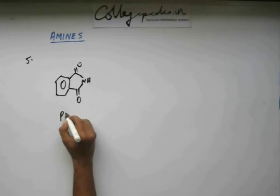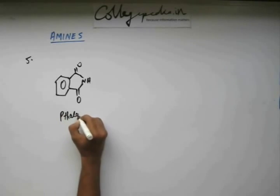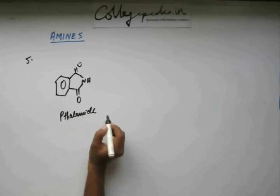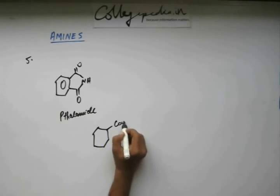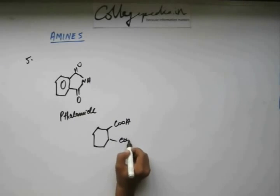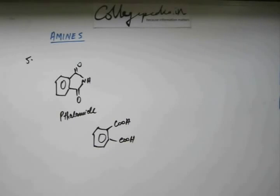This is phthalimide because this is phthalic acid. When you prepare amide of this phthalic acid, a cyclic amide results because they have 2 carboxylic acids and you get a phthalimide.